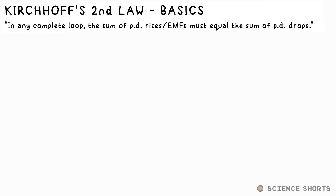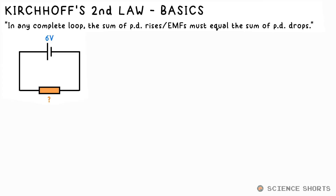Kirchhoff's second law is to do with voltage. In any complete loop, the sum of PD rises or EMFs must equal the sum of PD drops. Now the wording of this can be a bit confusing, so let's think about the simplest circuit we can make with just a 6 volt battery or cell.